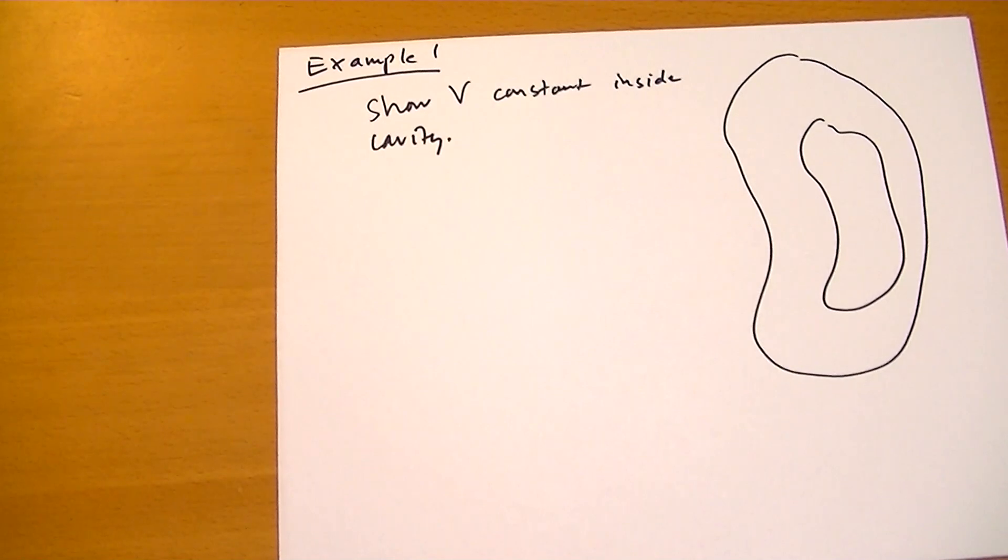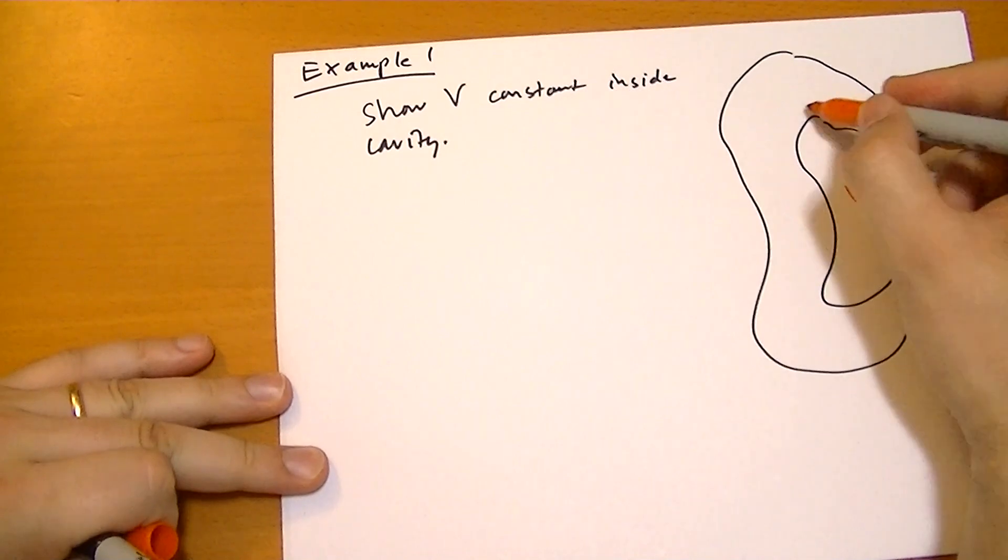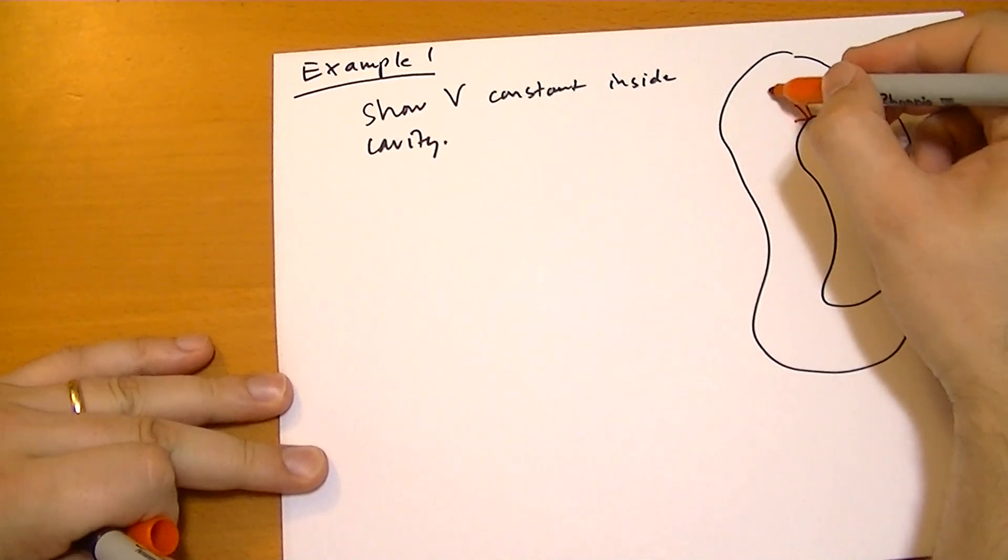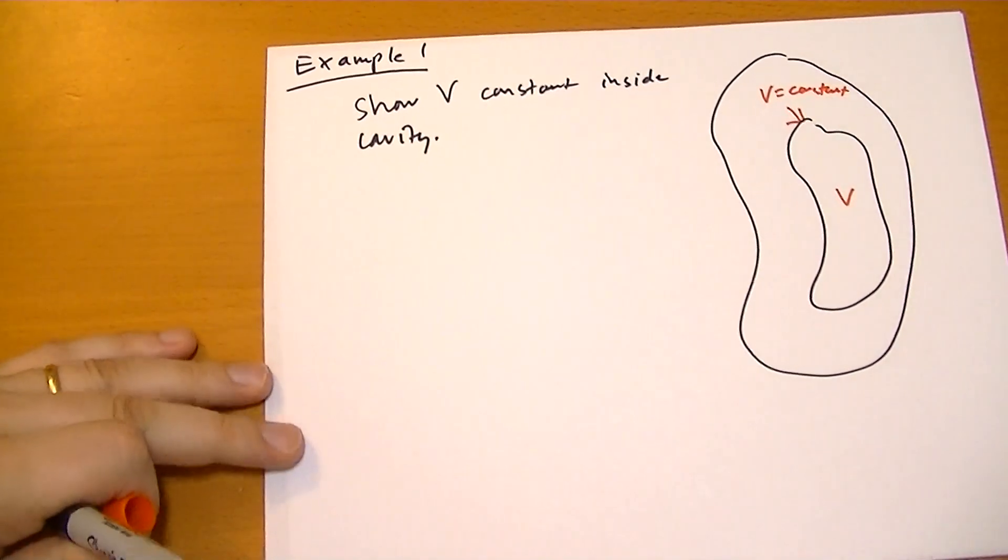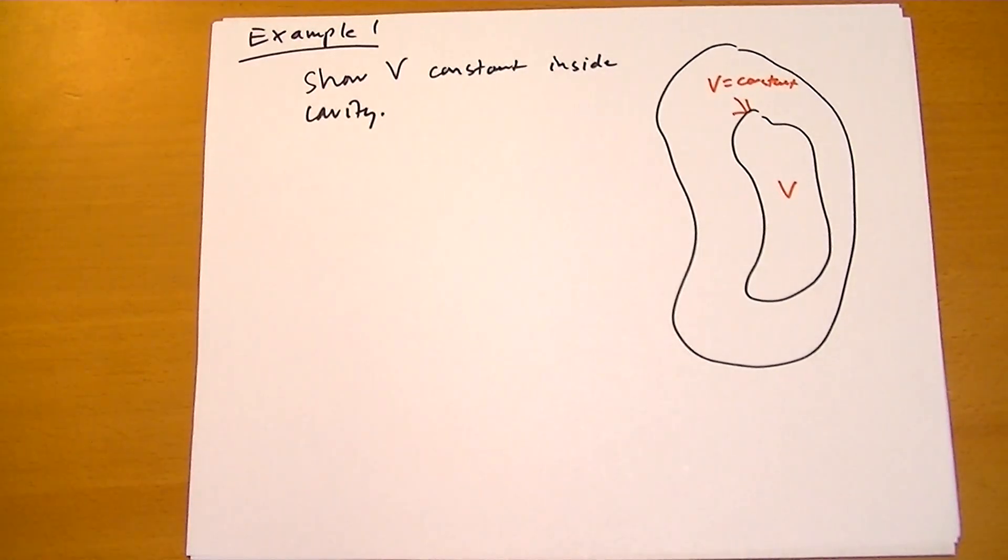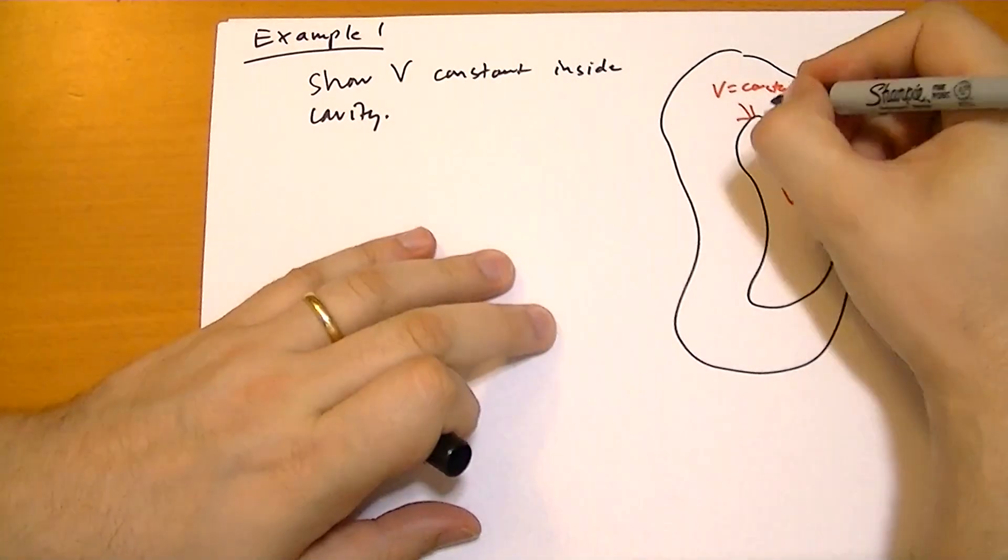We're given, because it's a conductor, we want to find V on the inside here. We know that the V here is some constant. Inside a conductor, the potential is constant. It doesn't change from one part of the conductor to the other. We're going to call this V_0.